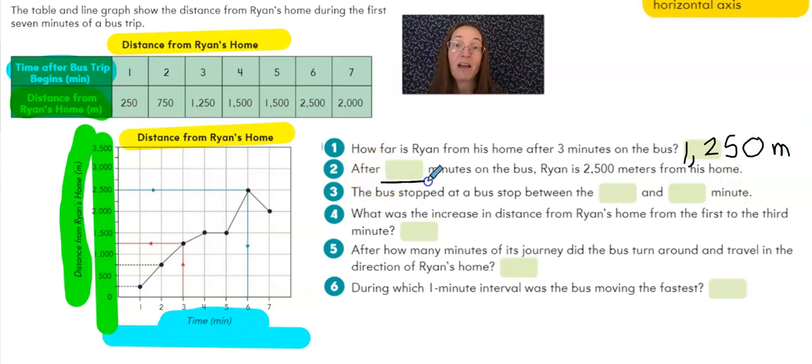Number two says after an unknown number of minutes on the bus, Ryan is 2,500 meters from his home. This time I know the distance but not the time. So let's go up the distance on our y-axis. Here's 2,500. And they've drawn this nice blue line for you across to the intersection between that information and the time. And if I go down here, I see that he reached that place six minutes on the bus.